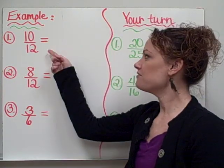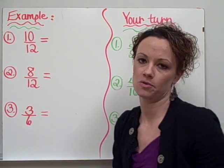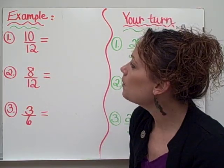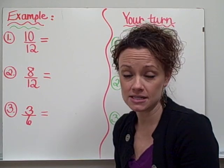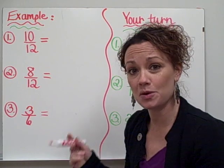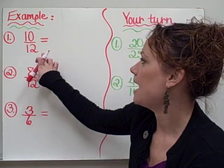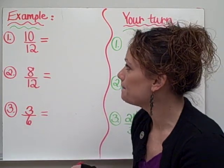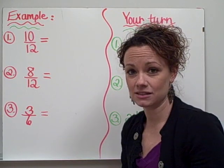All right, we have the fraction 10 twelfths. And if you notice, the numbers are quite high in both the numerator and the denominator. So what we need to do is divide both numerator and denominator by a number that is divisible by both of them to create a smaller yet equivalent fraction. So you need to ask yourself, which number goes into both 10 and 12?